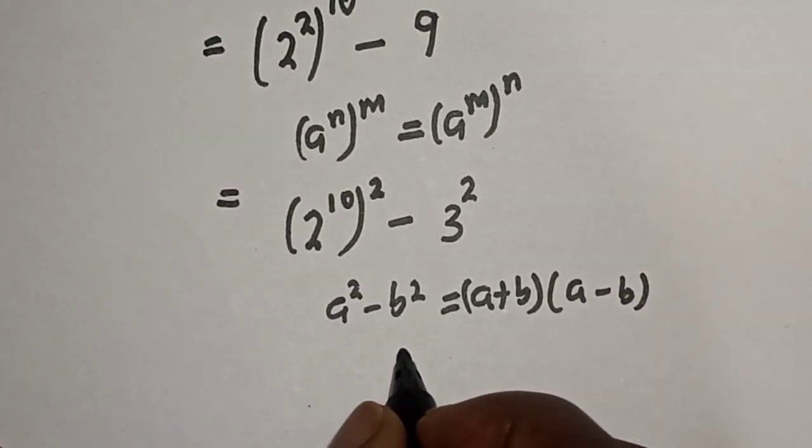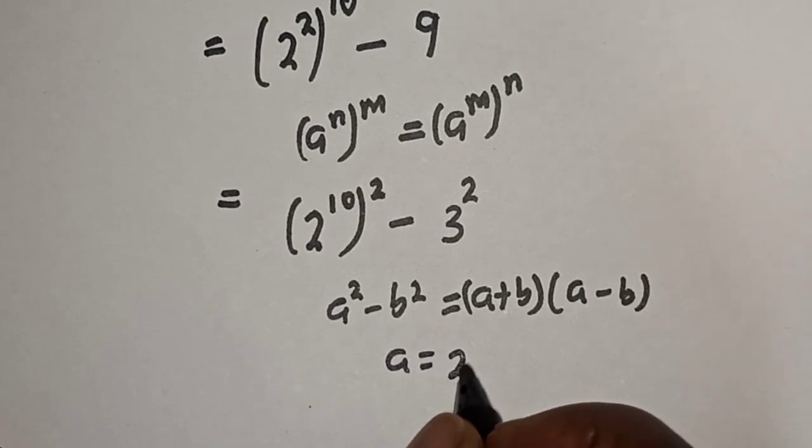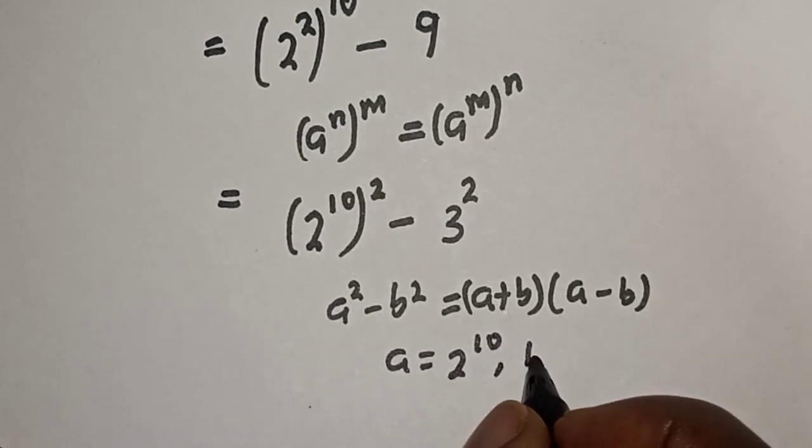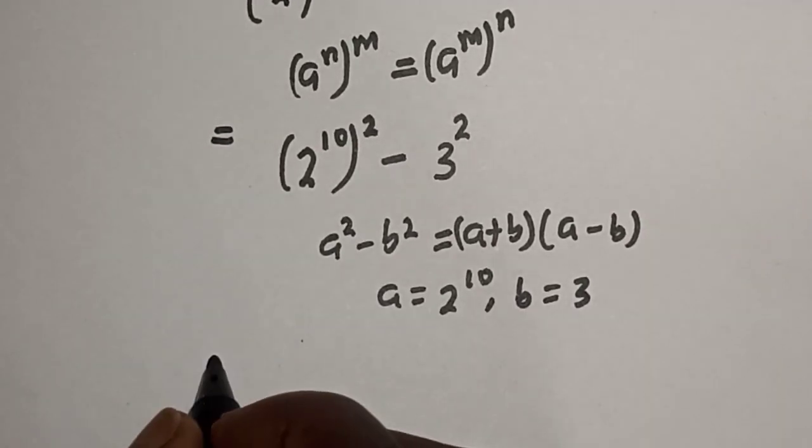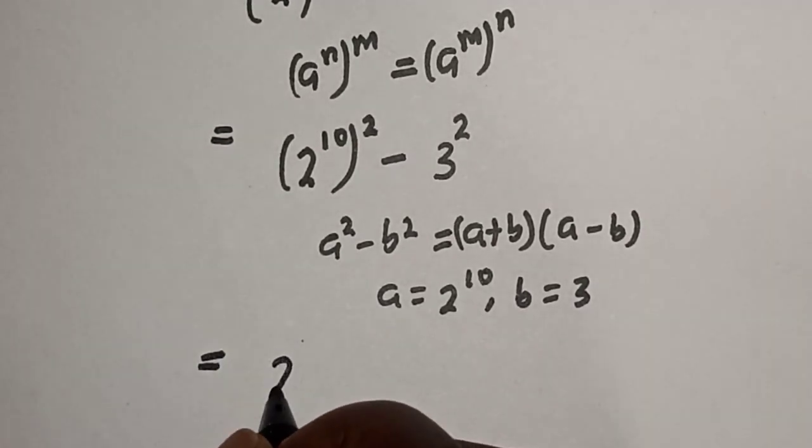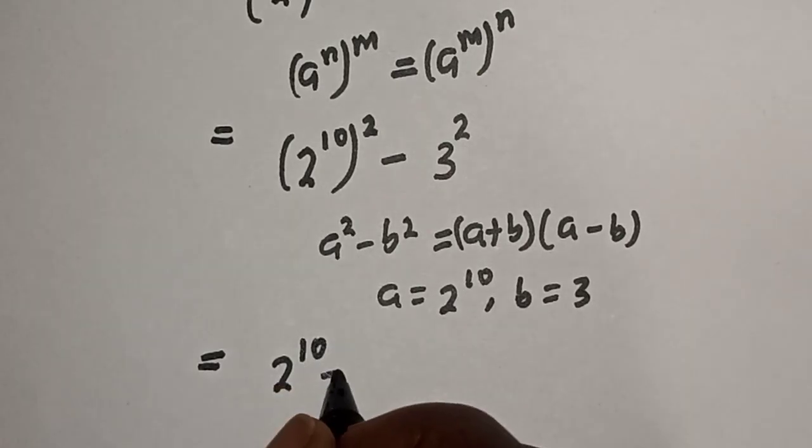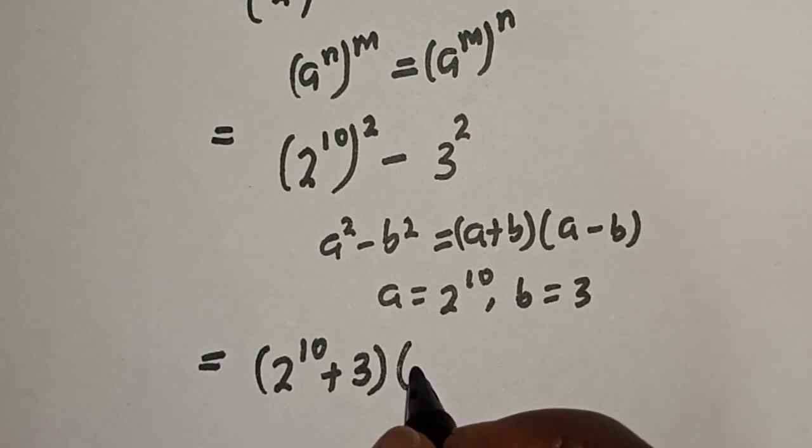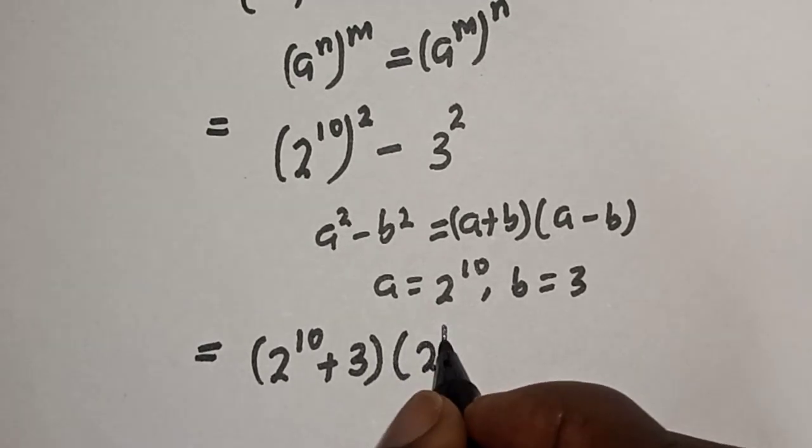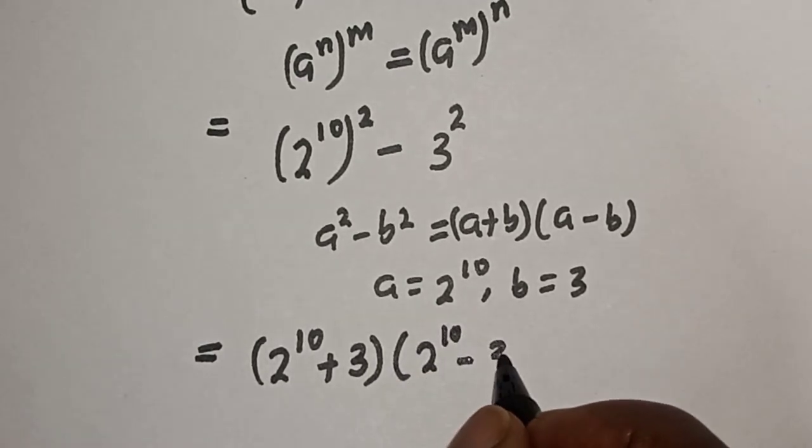Where a is equal to 2 raised to power 10 and b is equal to 3. So we have 2 raised to power 10 plus 3, times 2 raised to power 10 minus 3.